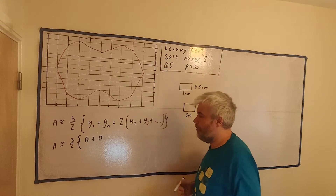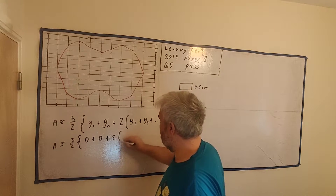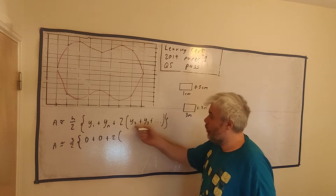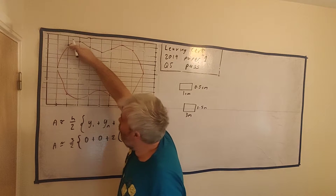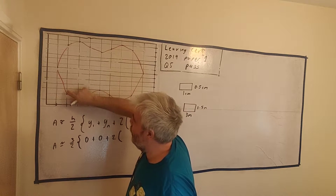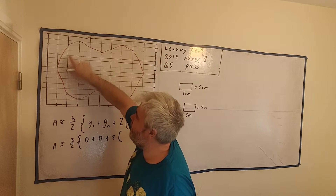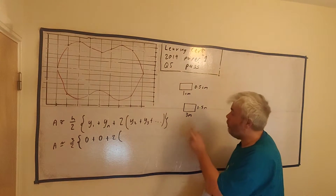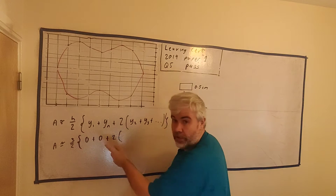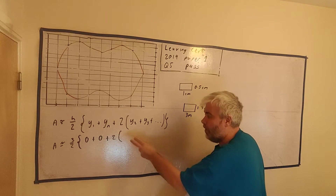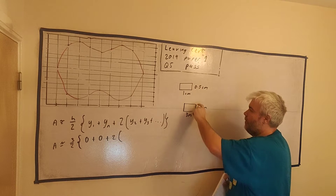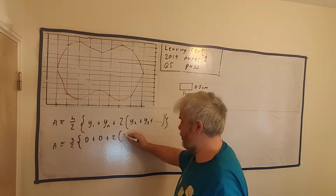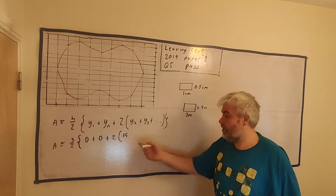If you do not use these as your first and last, your answer will be slightly wrong and you will lose marks for it. What's next? We have a plus, a two, a bracket — just write down exactly what you have, only replacing the letters with things you know. Why two? The second height — from here all the way up to here — how many blocks is that? One, two, three, four, five, six, seven, eight, nine, ten. Ten blocks. Ten multiplied by 1.5 is 15.